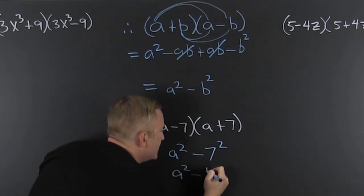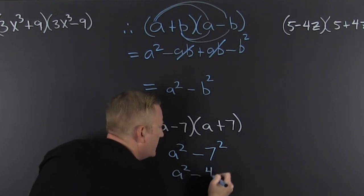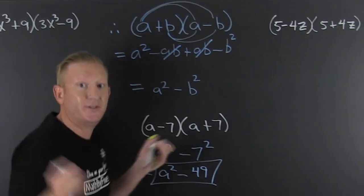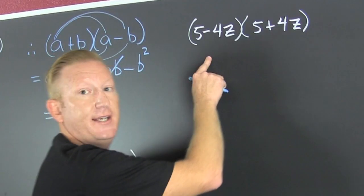So then I can just go and say a squared minus seven squared, so that's a squared minus forty nine.